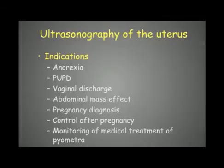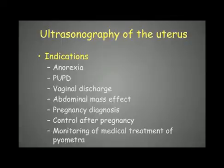The indications for uterine ultrasonography include anorexia, PU/PD, and vaginal discharge — all signs that can be seen with pyometra, for example. We also examine if there is an abdominal mass effect, to diagnose or monitor pregnancy, or to monitor the response to medical treatment in cases of pyometra.